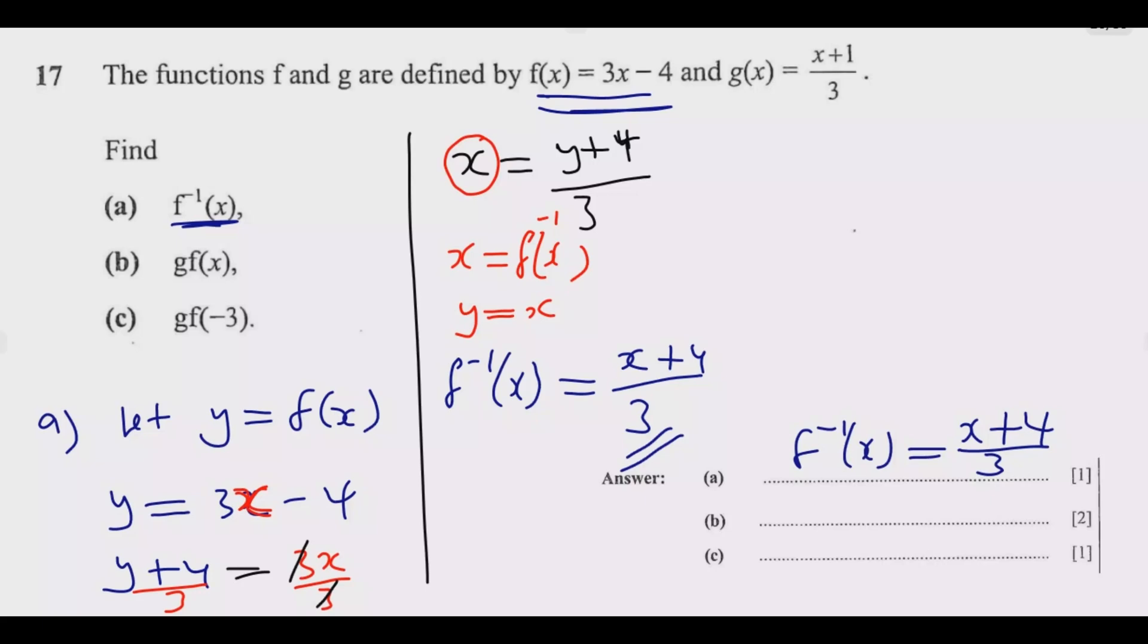After answering question (a), we can answer question (b). Let me use the space here. This tells me g(f(x)) means I'll go and look for the g function. In the g function, wherever there is x I'm going to put f(x), so it will be (f(x) plus 1) over 3. What is f(x)? This is f(x).